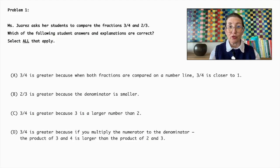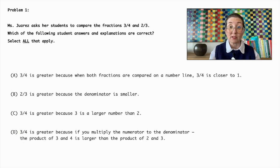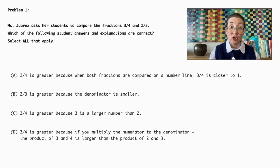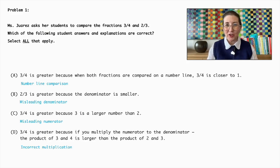Option B states that two-thirds is greater because the denominator is smaller. This is incorrect because the size of the denominator alone does not determine the size of the fraction. Rather, it depends on the relationship between the numerator and the denominator. Option C suggests that three-quarters is greater because three is a larger number than two. This is also incorrect because comparing the numerators alone without considering the denominators does not accurately compare the fractions. Option D claims three-quarters is greater because multiplying the numerator by the denominator gives a larger product. This method is incorrect for comparing fractions as it doesn't accurately reflect their sizes.